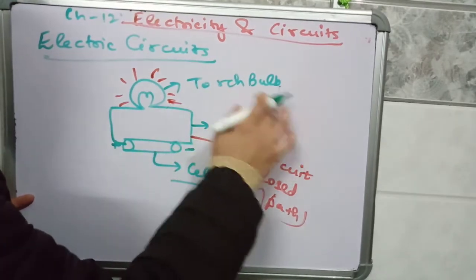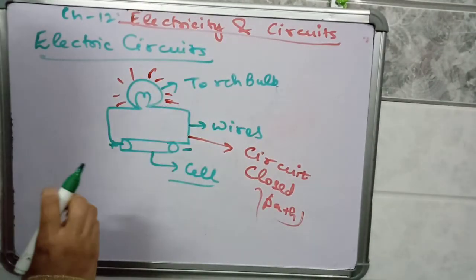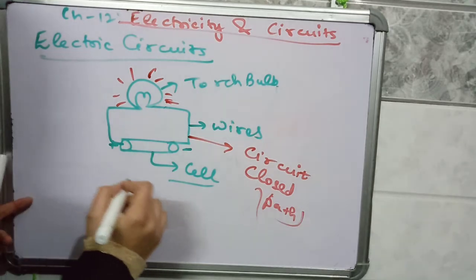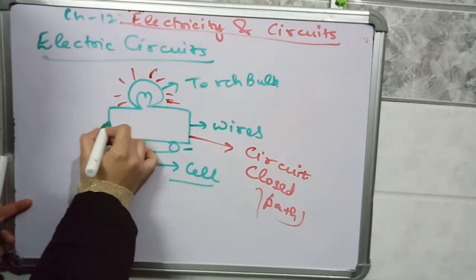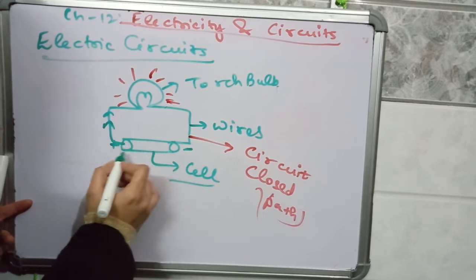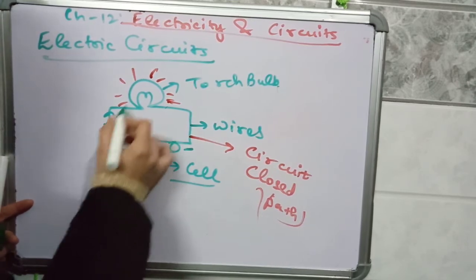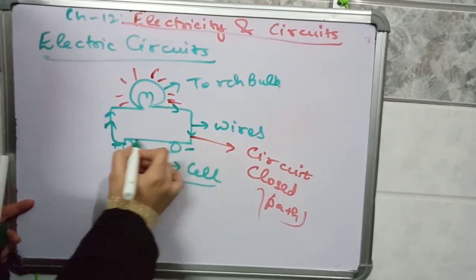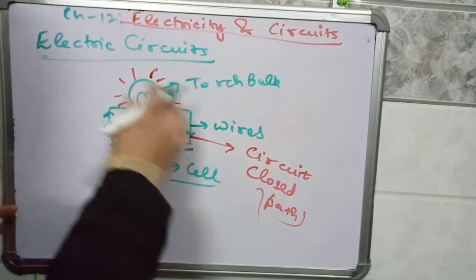How is light energy being produced by the torch bulb? Because electric current is flowing from the plus of the cell or battery to the minus of the cell or battery. There are charges flowing in this circuit.